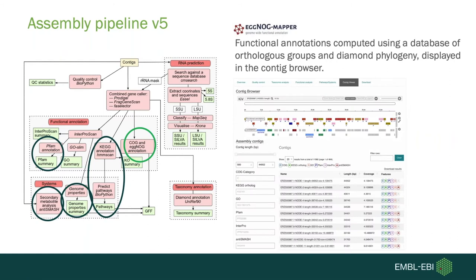The final functional annotation is EggNOG-mapper, a tool for fast functional annotation of novel sequences using a large database of pre-computed orthologs and groups. It outputs many different functional annotations, one of which is COG — Clusters of Orthologous Groups. Using EggNOG and all previous functional annotations, we can generate a contig browser that lets you look at each contig and the features within it.